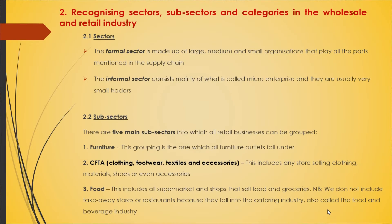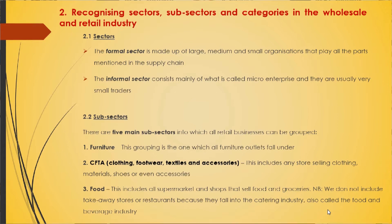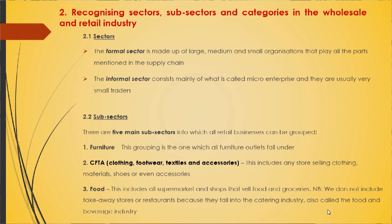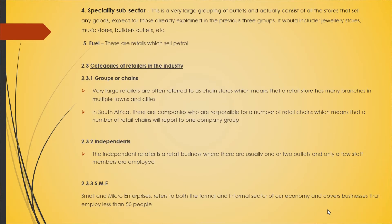We also looked at recognising the sectors, sub-sectors, and categories within the wholesale and retail industry. There are two different types of sectors: the formal and the informal sector. We also looked at the five main sub-sectors in which all retail businesses can be grouped: furniture, CFTA (clothing, footwear, textiles, and accessories), food, specialty sub-sector, and fuel.